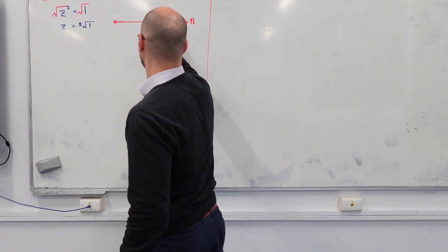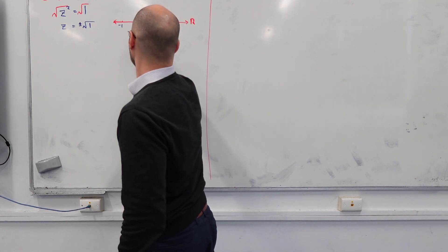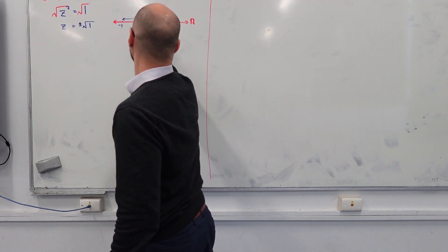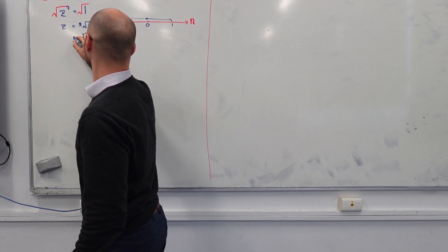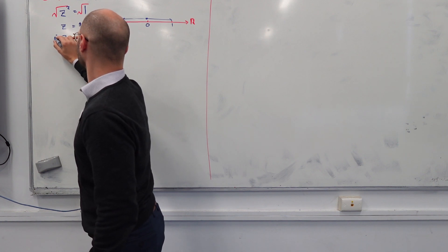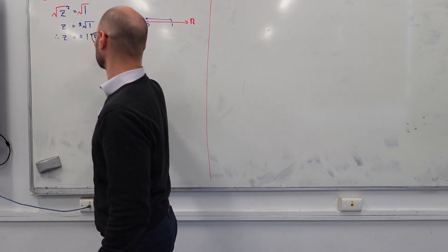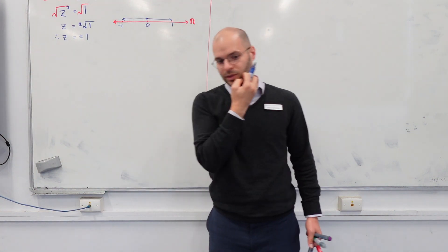and we'll say we're on the real number line. If this is 0, this would be 1, this would be minus 1. So we're going 0, 1, negative 1. So there and there. Easy peasy lemon squeezy.